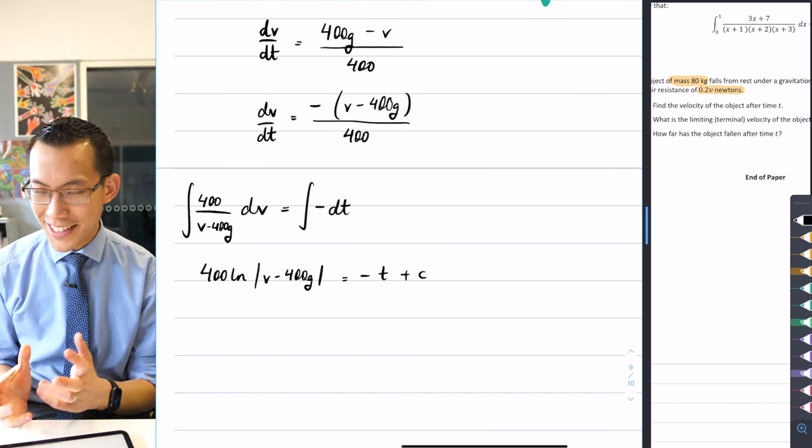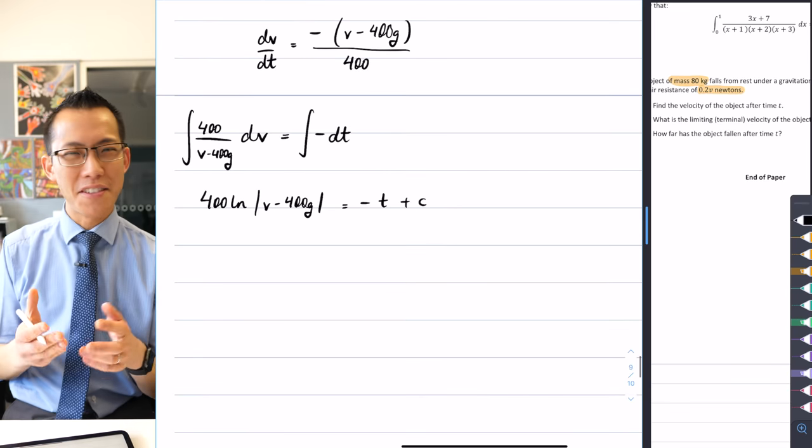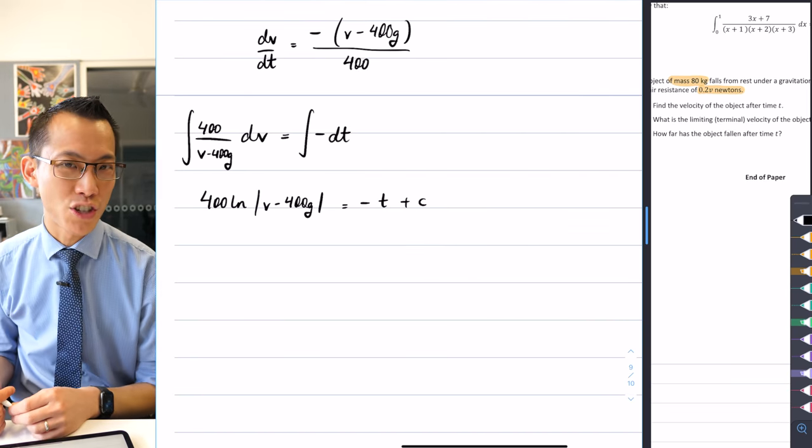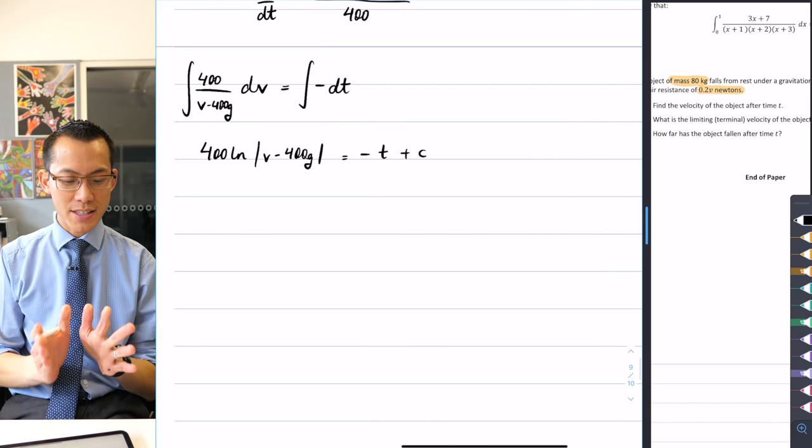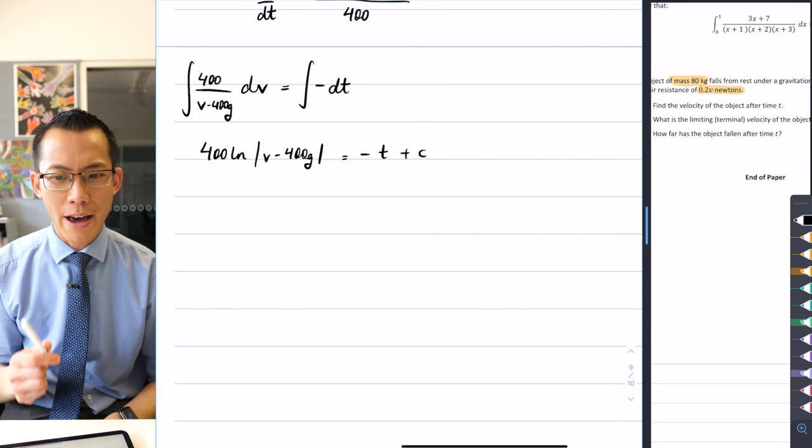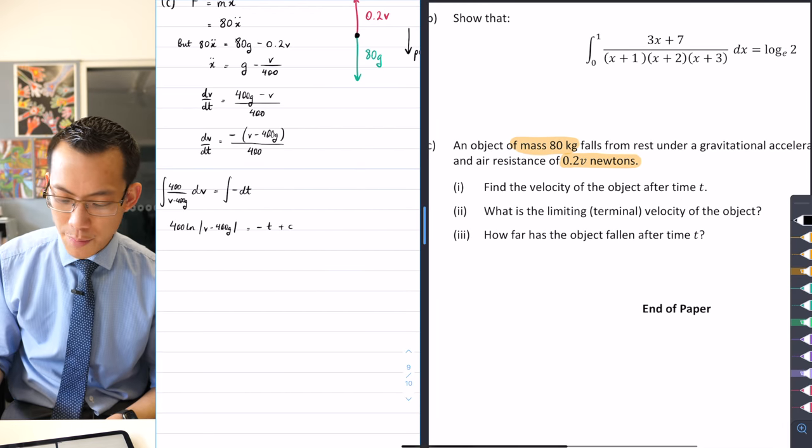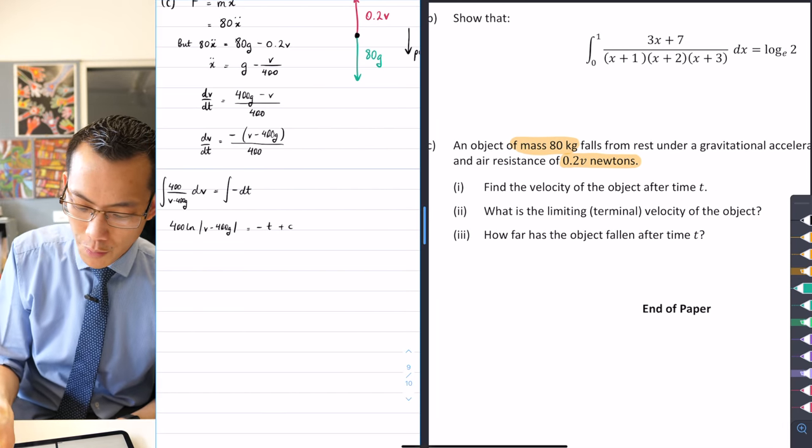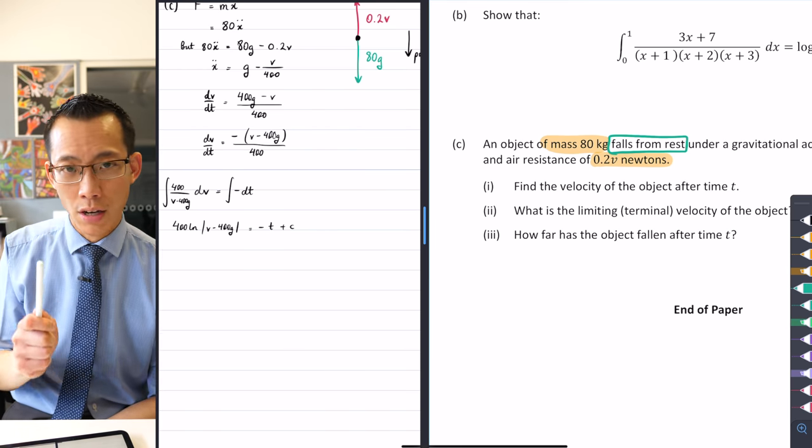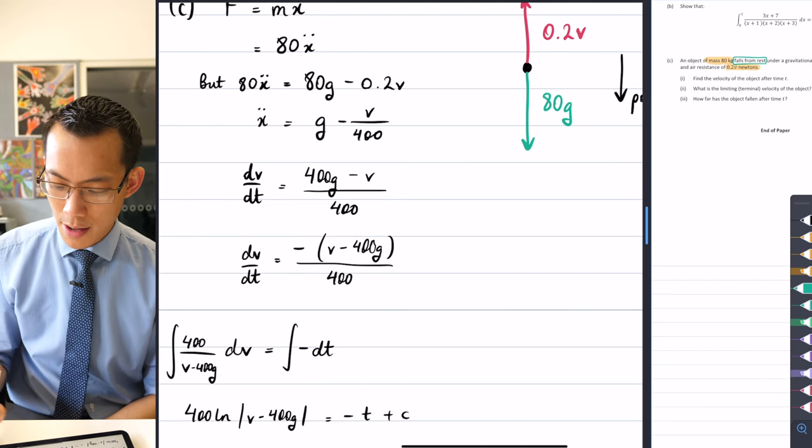And bewilderingly, some people forgot this was an indefinite integral and you had a constant that you had to worry about. This was an advanced idea that I guess we had forgotten about focusing on all the extension 2 stuff. So there we go. I've got this expression here, and I'm going to need to find out what this constant is. How do I do that? Well, if you have a look back at the question, you can see that this object of mass 80 kilograms, it falls from rest.